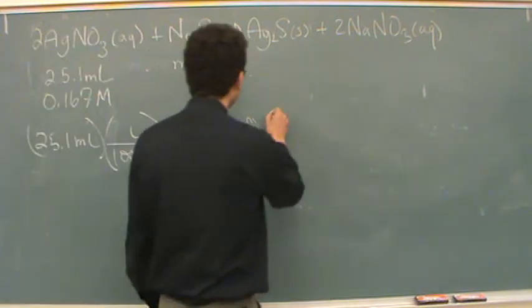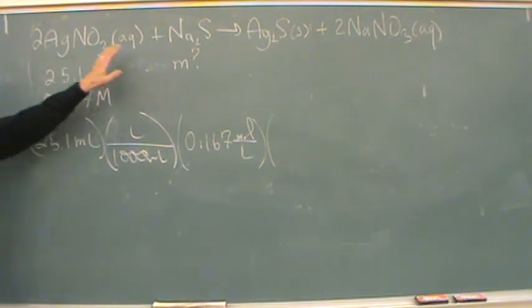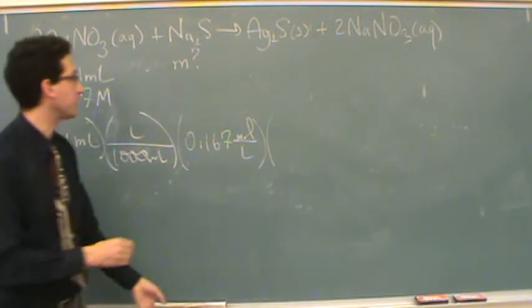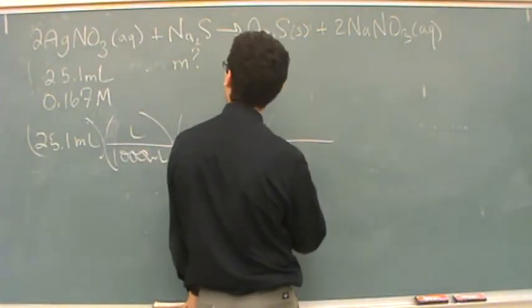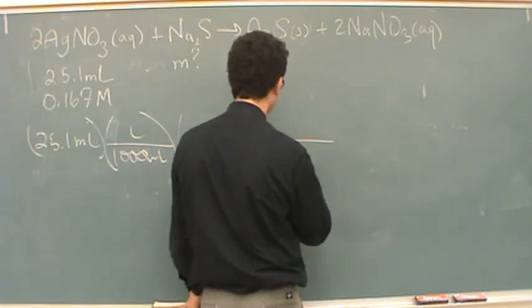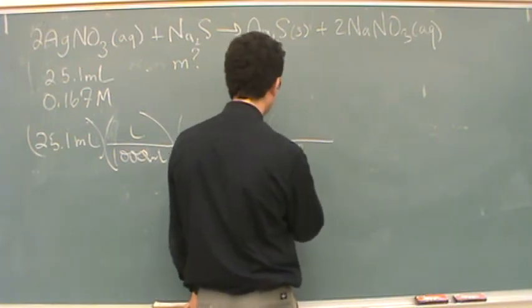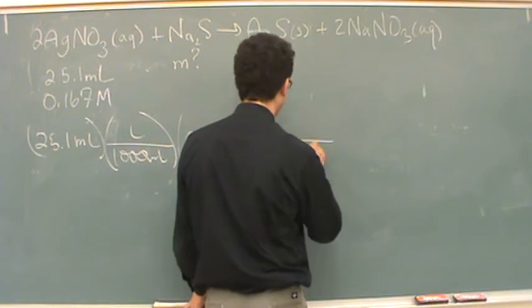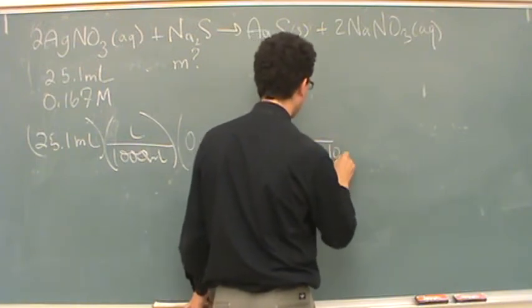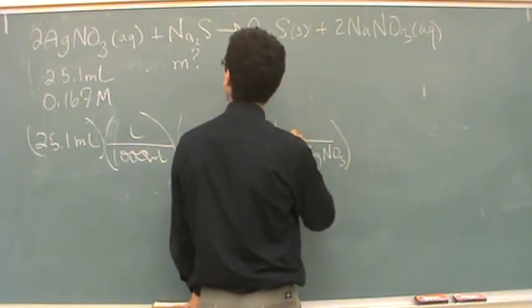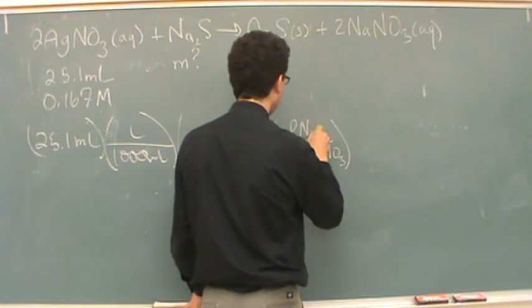Now that's not what we care about. So we're here. We want to go to what we want, which is the sodium sulfide. So in this case we've got one mole. Oh no, two moles in the denominator of the silver nitrate for every one mole of the sodium sulfate.